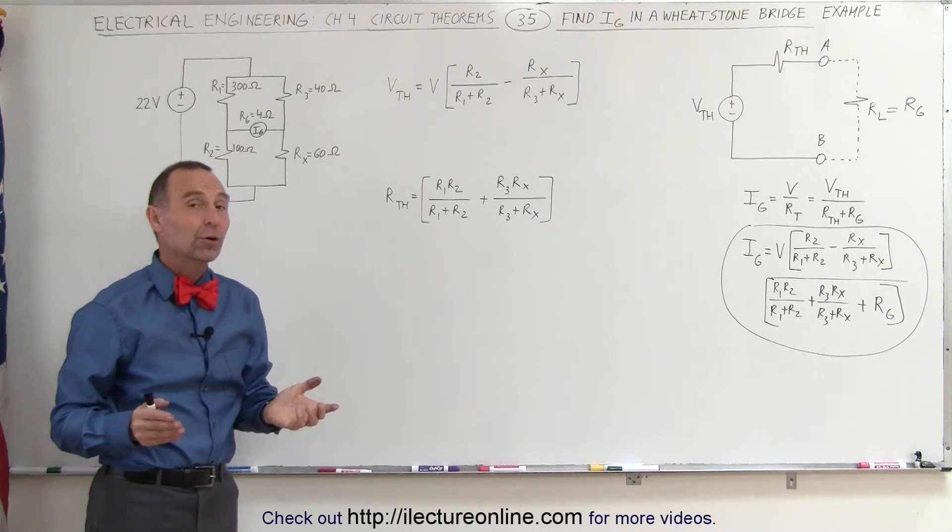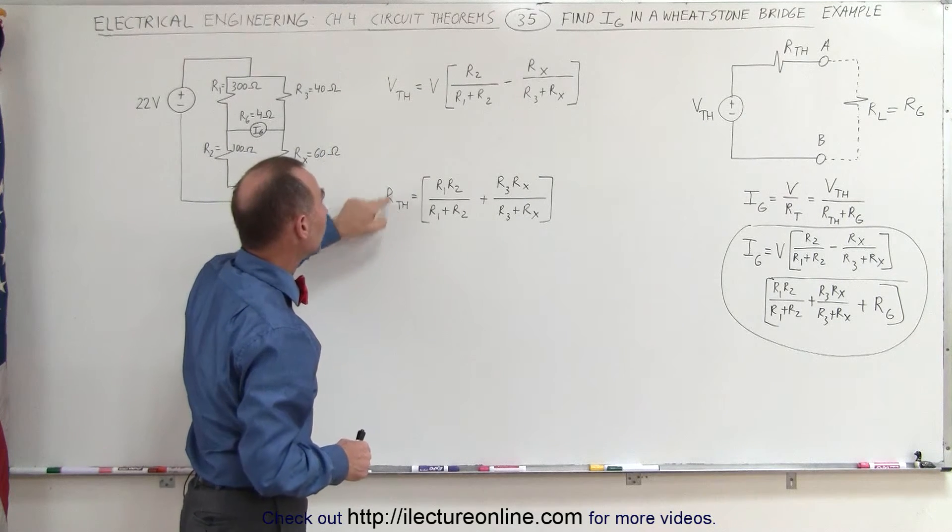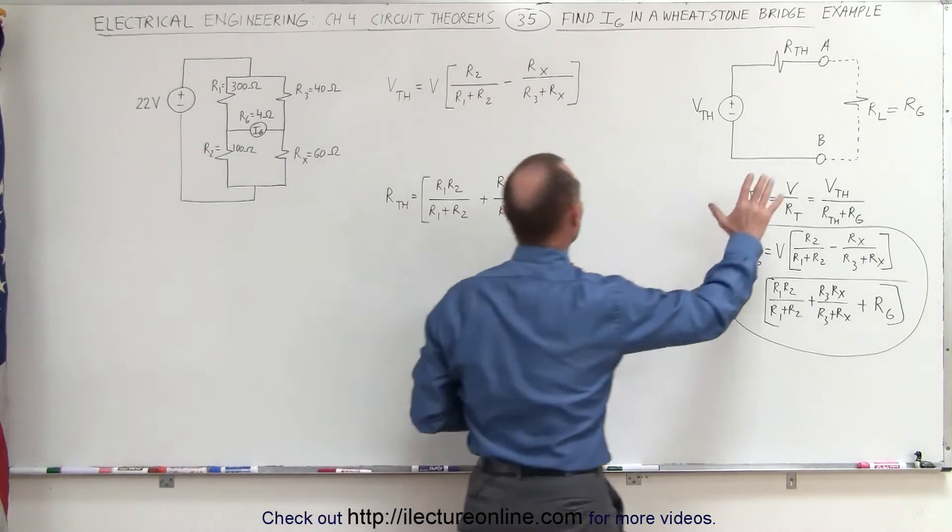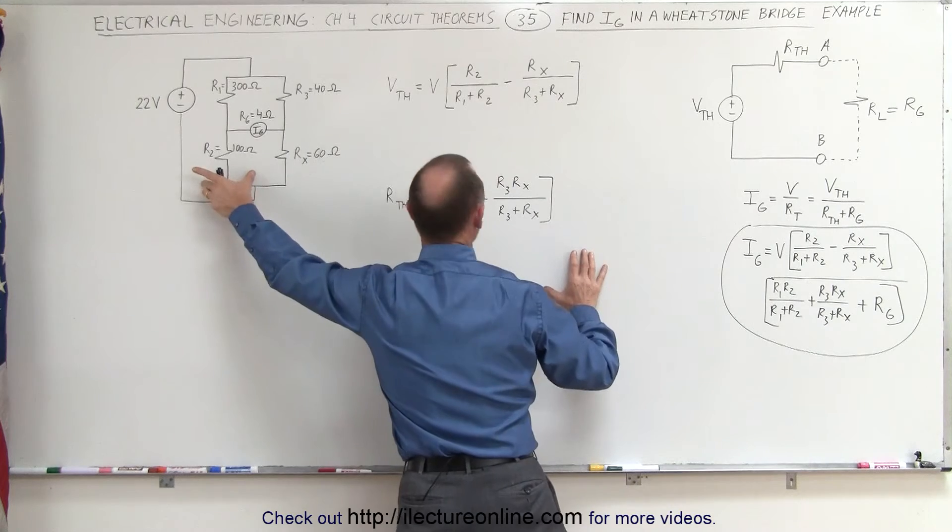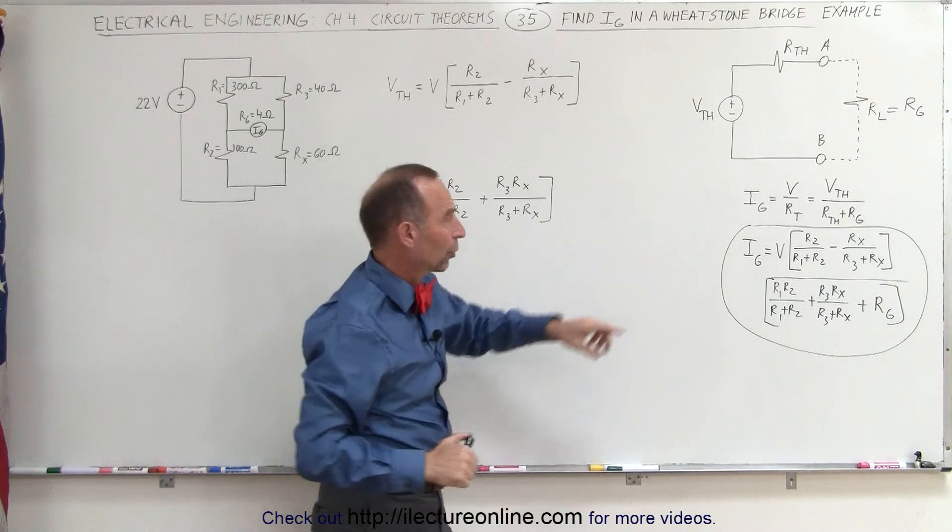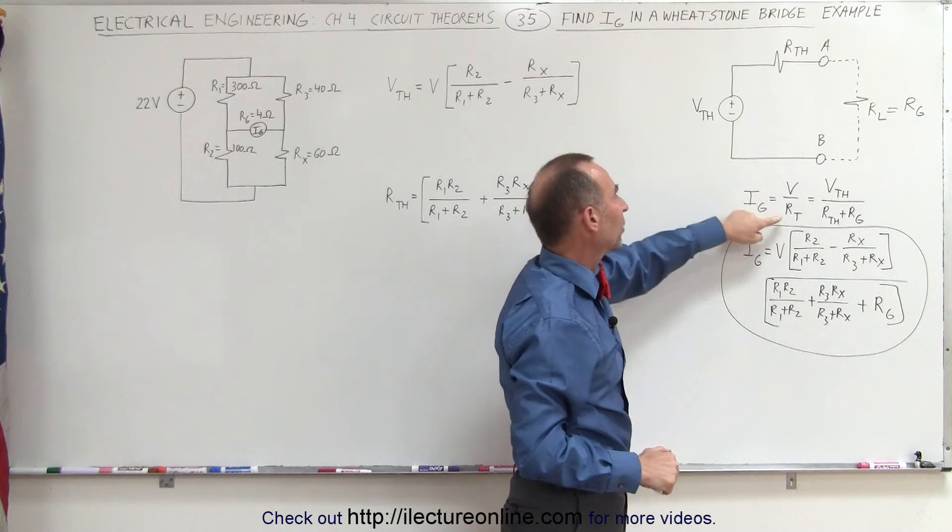In the previous video we showed you how to find the Thevenin equivalent voltage and the Thevenin equivalent resistance. And these are the equations we came up with. This was derived from the equivalency of this circuit being transformed into the Thevenin equivalent circuit. The current to the galvanometer is then equal to the voltage divided by the resistance.